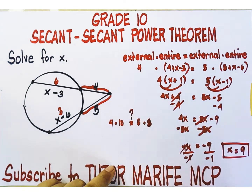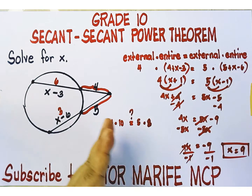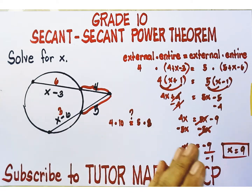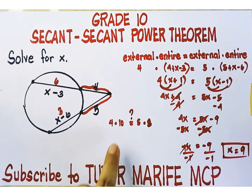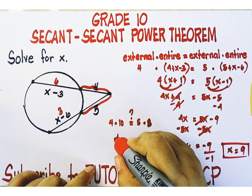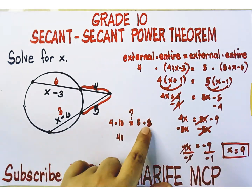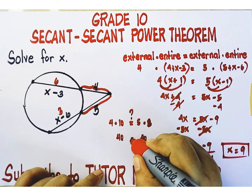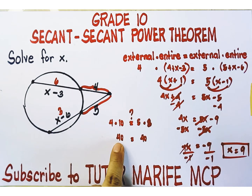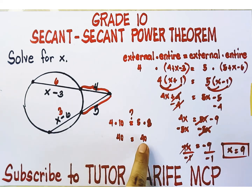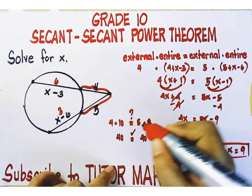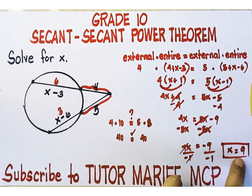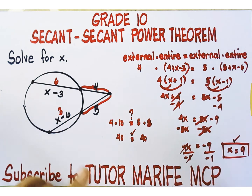Let's verify both sides are equal. Four times ten is forty, and five times eight is forty. The left-hand side equals the right-hand side. Therefore, we have validated our answer — x equals nine is correct.